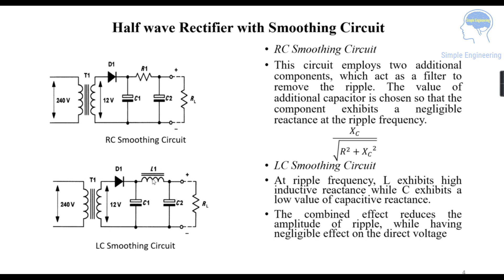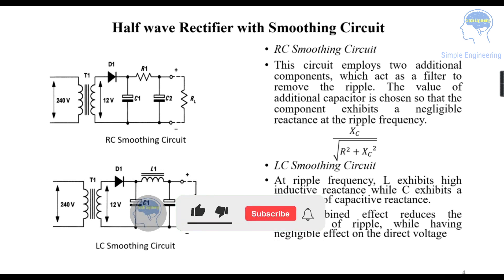In the LC smoothing circuit, an inductance L and an additional capacitor are the extra components. At the ripple frequency, the inductance exhibits a high inductive reactance while the capacitance exhibits a low capacitive reactance. The combined effect reduces the amplitude of the ripple while having a negligible effect on the direct voltage. This completes the half-wave rectifier with a filter, covering both the RC and LC smoothing circuits. Hope this is clear for everyone — if you find this useful, please share it with others. Thank you.